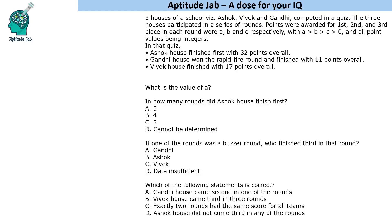Hello everyone, welcome to Aptitude Jab. This is an interesting set. There are three houses of a school: Ashok, Vivek, and Gandhi. They competed in a quiz. The three houses participated in a series of rounds. Points were awarded for first, second, and third place in each round — the points awarded were A, B, and C respectively, with A greater than B greater than C, all greater than zero, and all point values being integers.